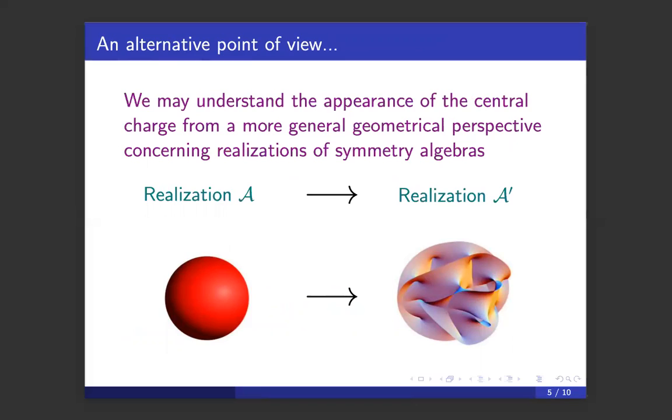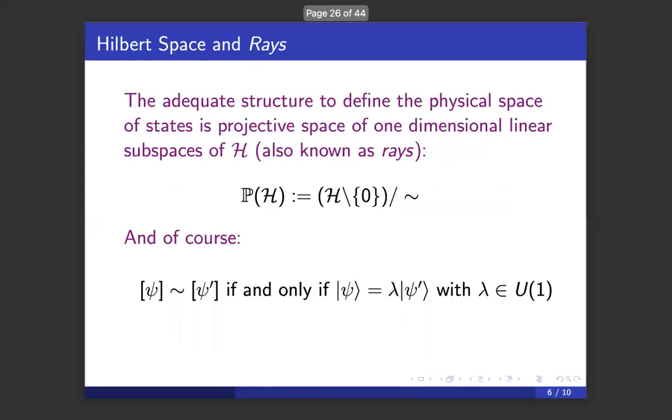The idea was to talk about an alternative point of view, which is to understand the appearance of the central charge from a more general geometrical perspective concerning realizations of symmetry algebras or groups. The idea is that we may have an object, like that red sphere, and a certain algebra acting on that object. Then, when we change our object from the sphere to a weird manifold, it may happen that the algebra is not able to realize in the same way but instead might suffer a certain modification.